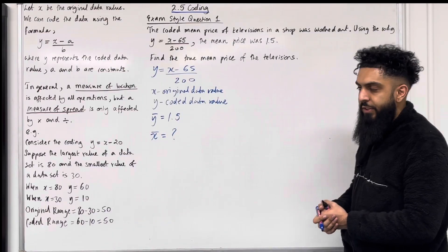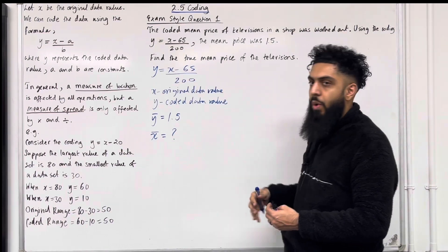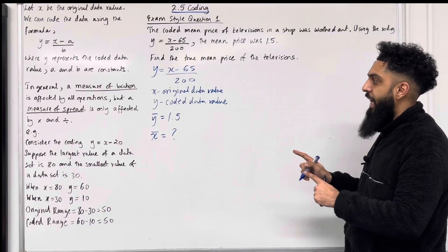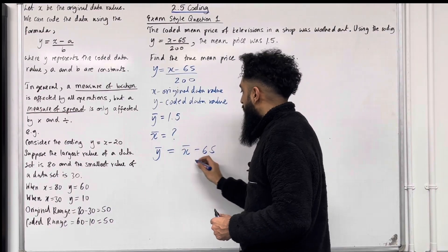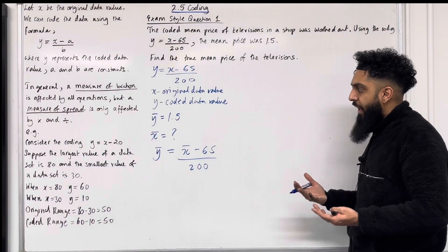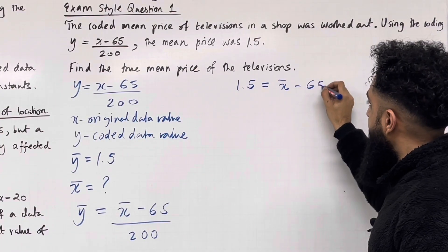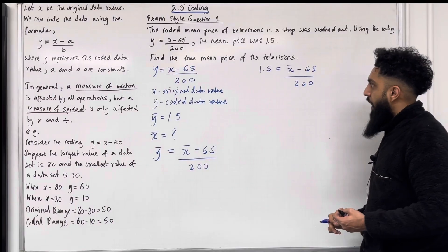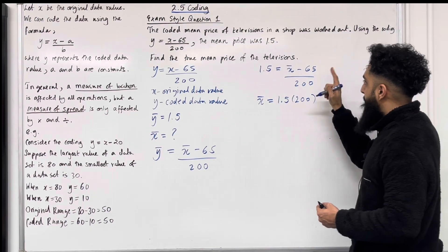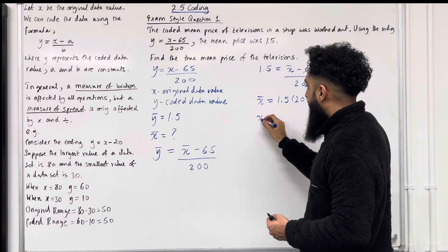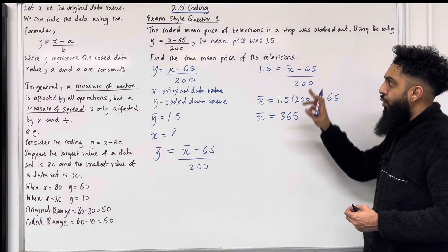To solve this, we take the coding and modify it. A measure of location is affected by all operations, so the minus and the division will be included. We put a bar on top of y and x: y-bar equals x-bar minus 65 all over 200. Substituting y-bar equals 1.5 gives us 1.5 equals x-bar minus 65 over 200. Rearranging: x-bar equals 1.5 multiplied by 200 plus 65. Putting this into the calculator gives x-bar equals 365, which is the true mean price of the televisions.